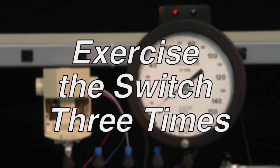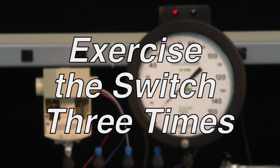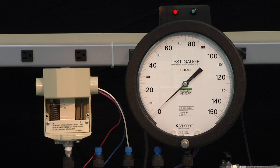This should be done three times. So the first step is to take the switch from zero up to the 80 PSI target and leave it there. Bring the pressure up to 80 PSI and lock it off.